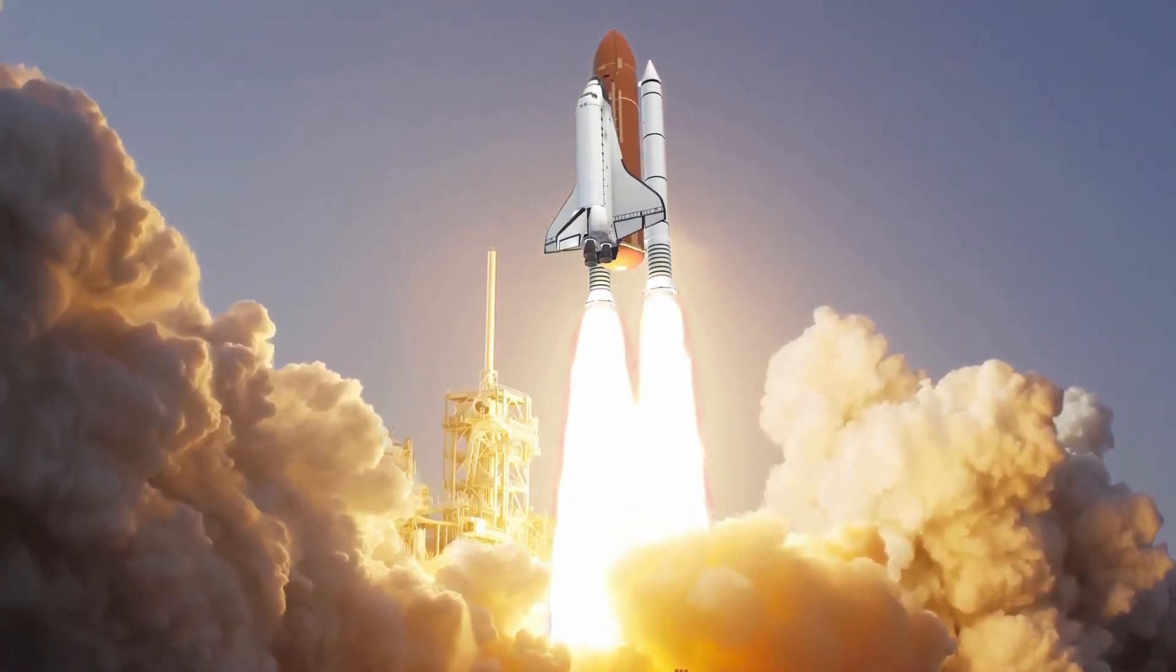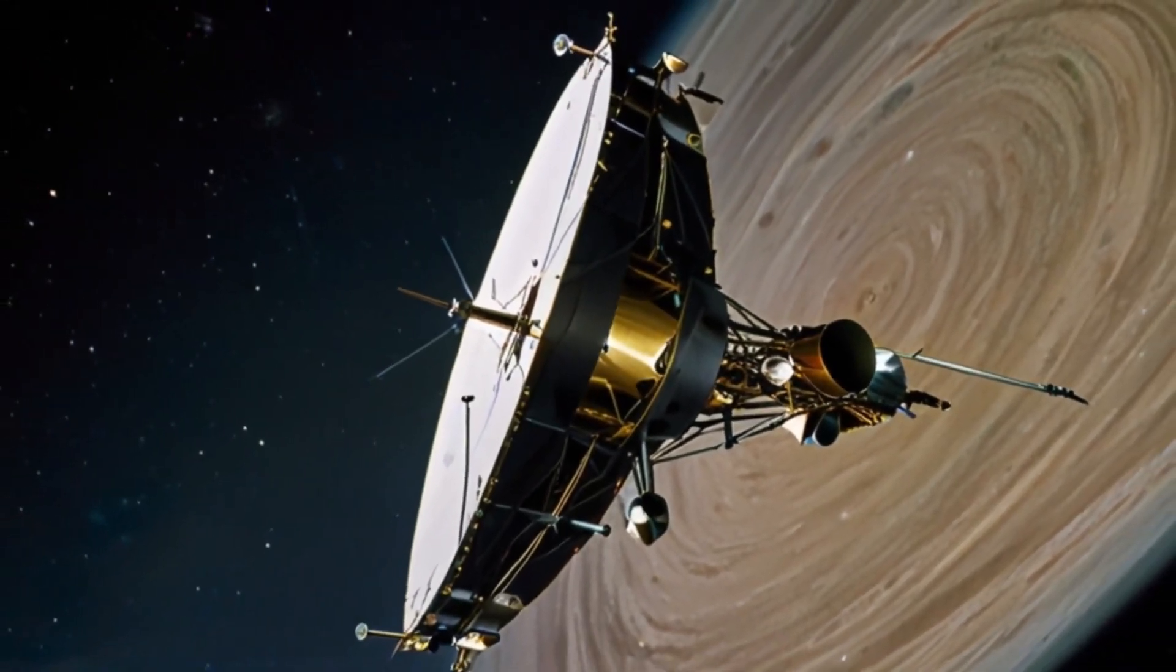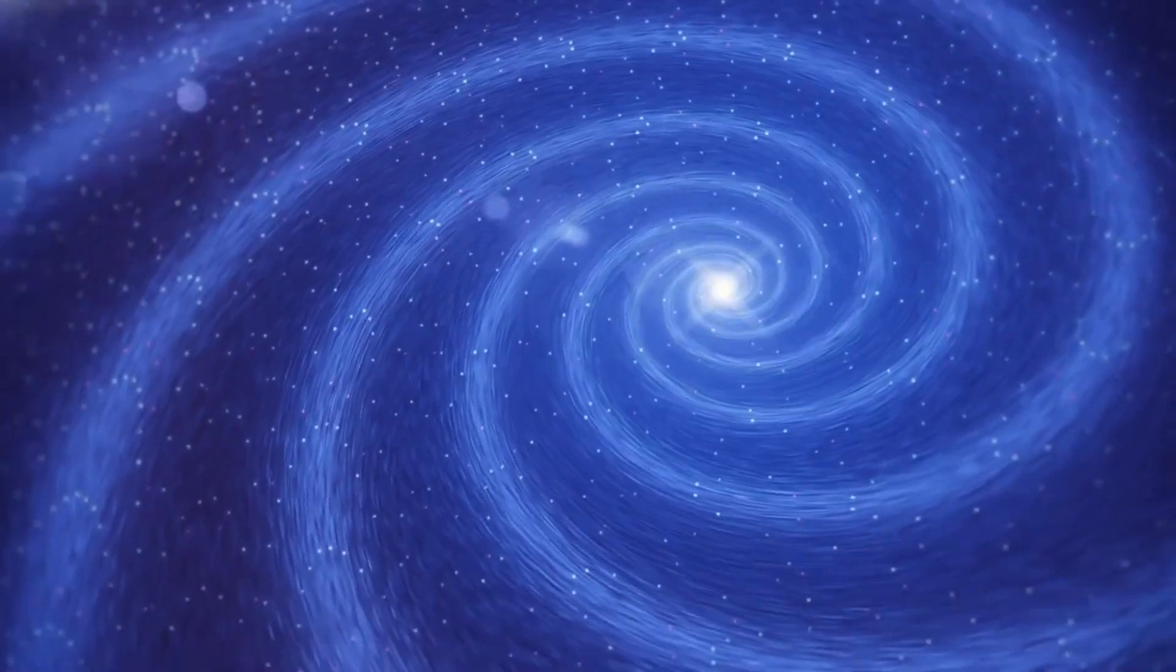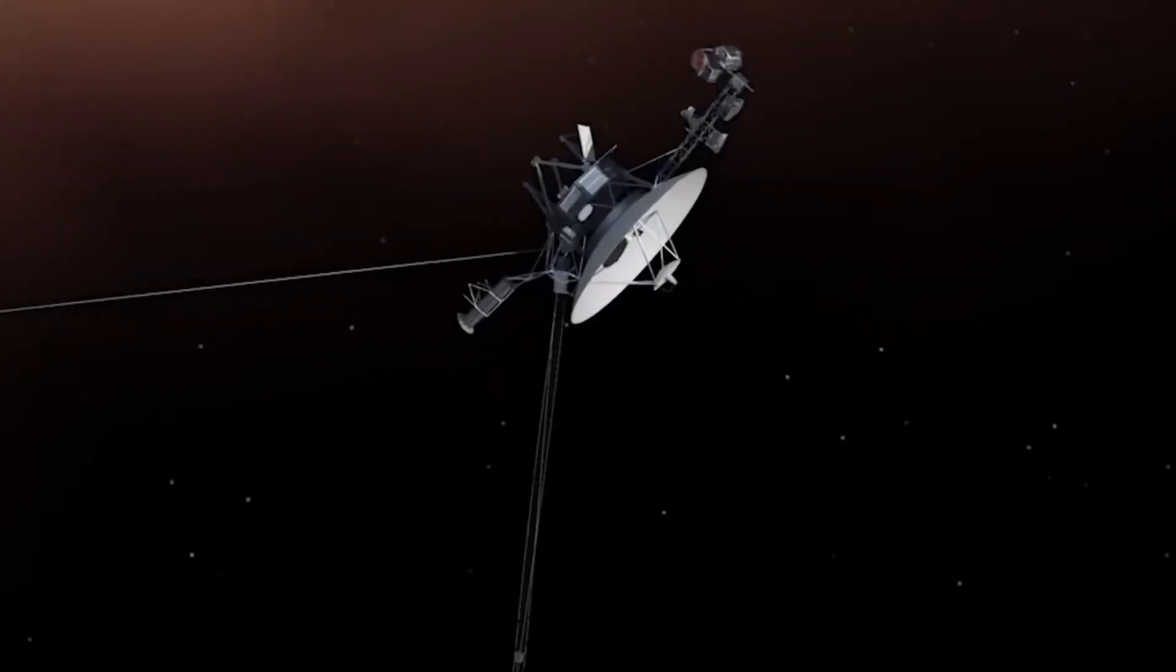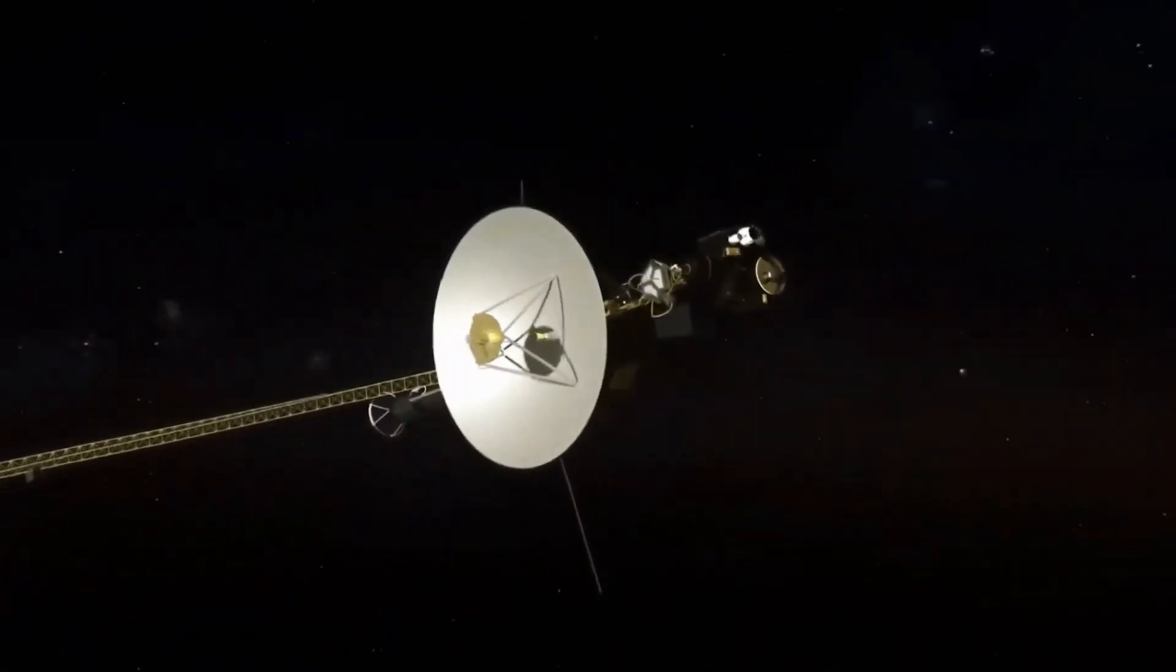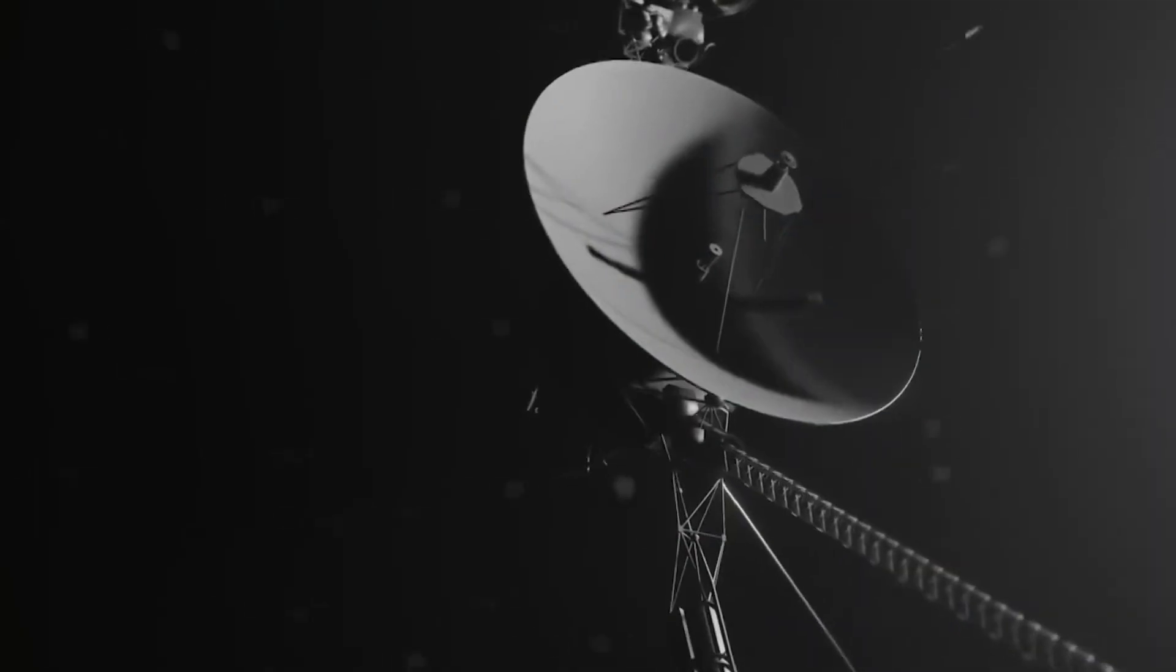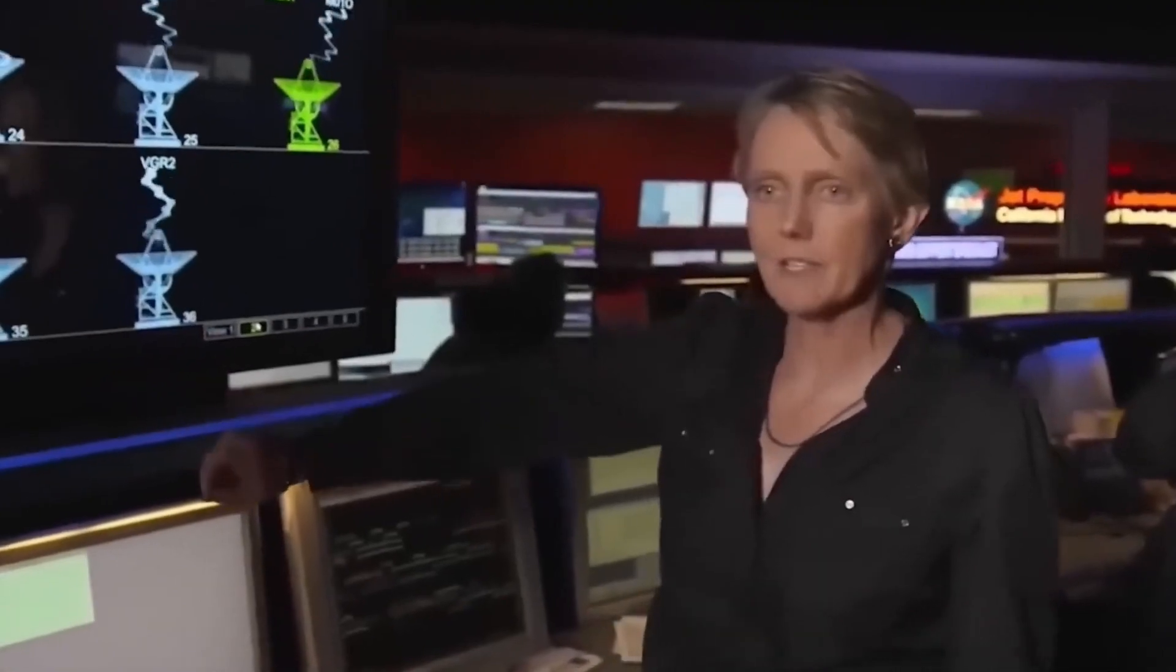Voyager 1 has been exploring interstellar space for over a decade, outside the protective magnetic field of the Sun. This magnetic shield, similar to Earth's magnetic fields, protects the spacecraft from cosmic rays and other space radiation, acting like a cosmic suit of armor. When it comes to technology, just as Earth's computers can face challenges from high-energy particles and solar radiation, Voyager 1's onboard computers also encounter cosmic hurdles. Sometimes, energetic particles can interact with computer chips, leading to small memory errors that build up over time.